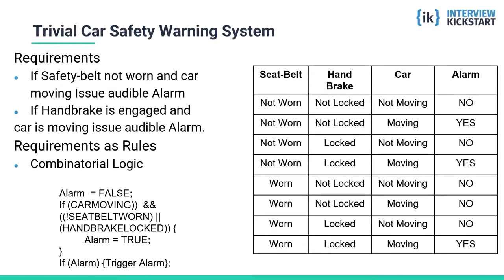For this simple set of rules, it's easy to arrive at clean code. However, most implementations start this way but then degrade as requirements grow. For example, we may add requirements such as checking the passenger seat belt status, and the presence or absence of a passenger detected by another sensor becomes one of the inputs. As the number of inputs increases, the number of combinations in the truth table exponentially increases, making coding and simplification complex.